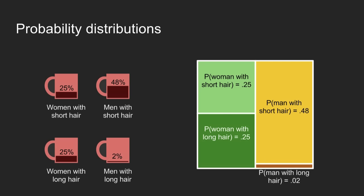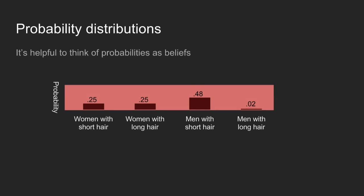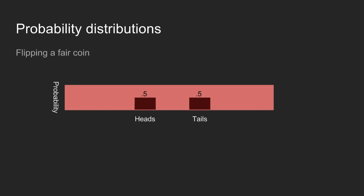Usually when we look at this, probabilities are shown side by side in a histogram. It can be really helpful to think of these as beliefs. For instance, if I flip a coin and hide the result, you might half-believe it's heads and half-believe it's tails until I tell you what it is.